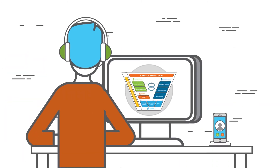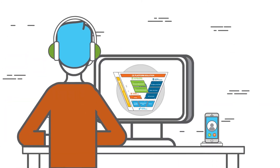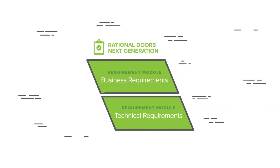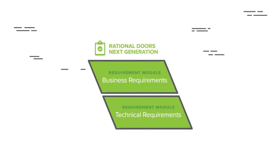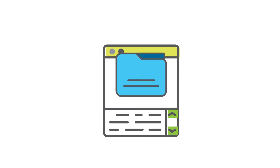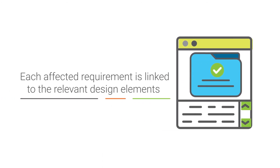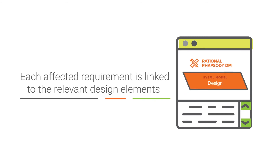When the phone rings at your desk, you immediately open the DOORS Next Generation application, or DNG, to capture the proposed changes to requirements. Once the requirements have been documented, the next step is to determine downstream impacts. Each affected requirement is linked to the relevant design elements inside the Rational Rhapsody Design Manager application.